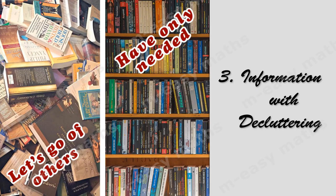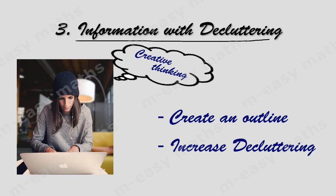Step 3 is information with decluttering. From the information you obtain through analysis, go for creating an outline for your work. See to it that no cluttering is done. Increase the intensity of decluttering and check out the flow of your information.